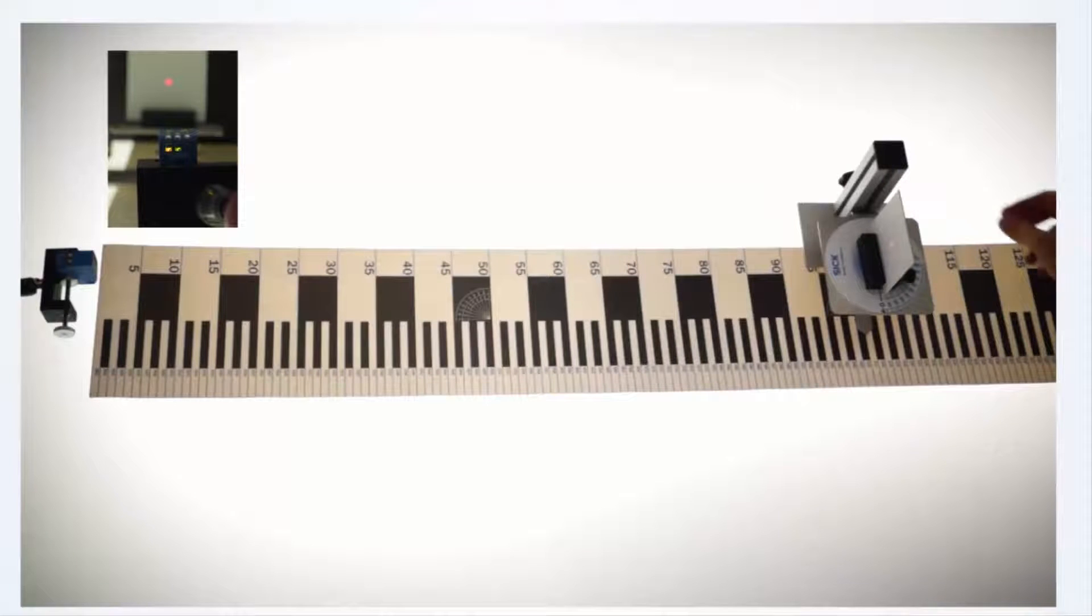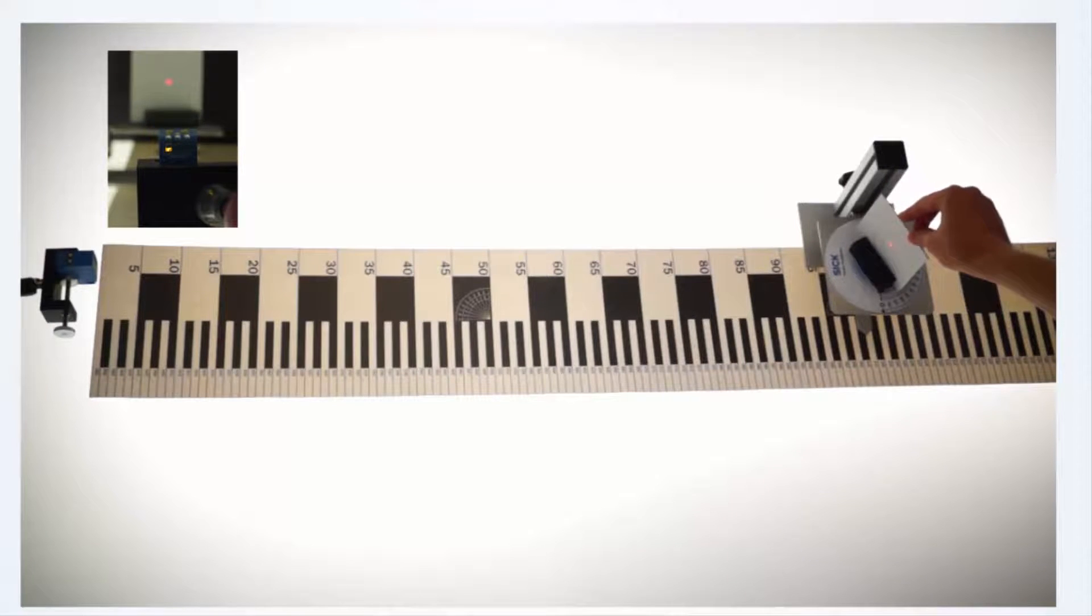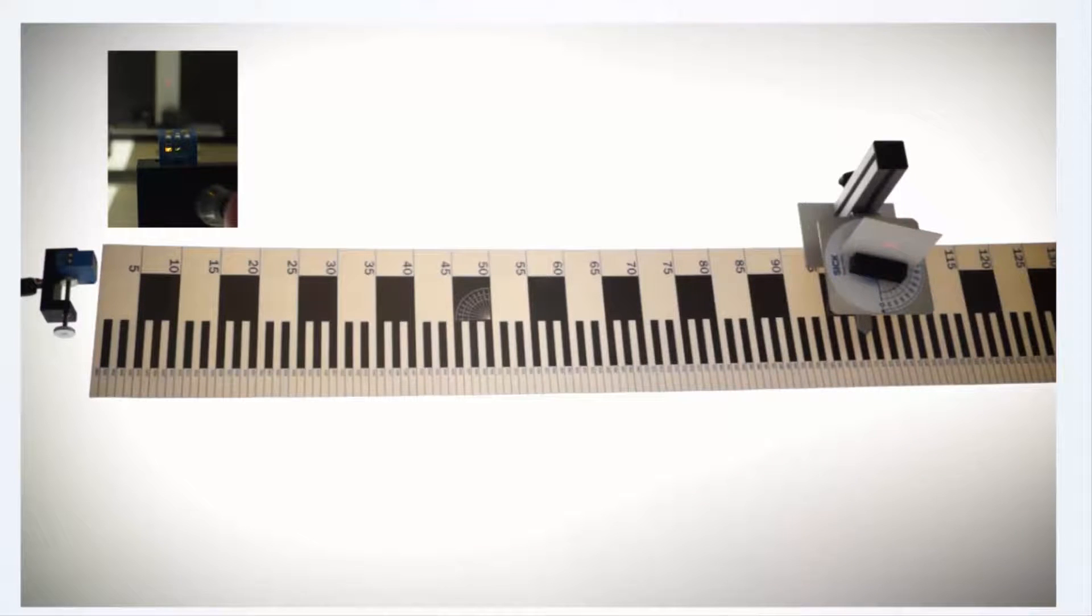We'll start again with a relatively easy to detect white target and turn this target away from the sensor. As you can see, the sensor still detects the object.